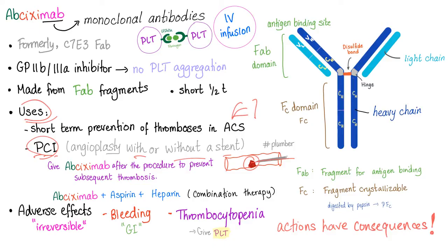Back to the antibody story: the Fab is the fragment for antigen binding. The Fc is the fragment of crystallizable — the crystallizable fragment.